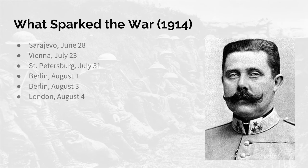In St. Petersburg, July 31st, Russia was an ally of Serbia and jumps into the fight. Berlin, August 1st, Germany, who is Austria-Hungary's ally, declares war against Russia. And then Berlin, August 3rd, Germany declares war on France. They were an ally to Russia, and they invaded neutral Belgium because of a quicker route to Paris. And finally, London, August 4th, Great Britain, who is an ally to France, declares war against Germany.